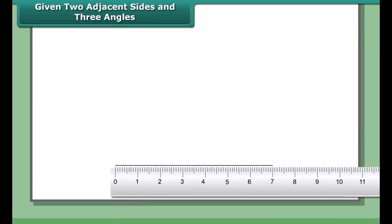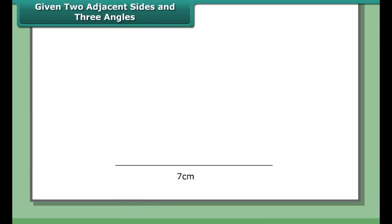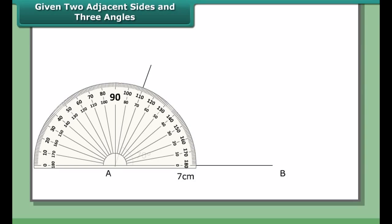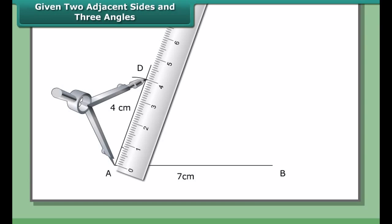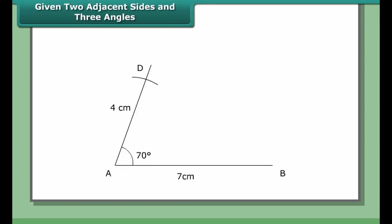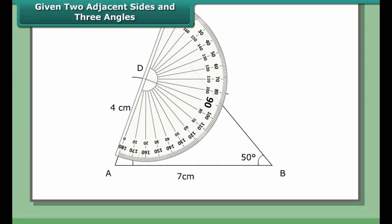Step 1: Draw the line segment AB equal to 7 cm. Draw angle A = 70° using a protractor. With A as center and radius 4 cm, cut an arc on the line to mark D. At B, draw an angle of 50°. At D, draw an angle of 100° with a protractor. Let the arms of these angles meet at C. ABCD is the required quadrilateral.